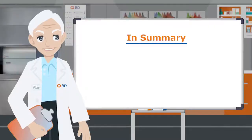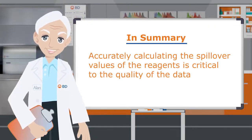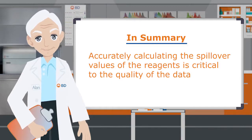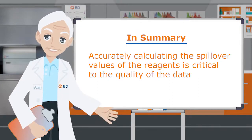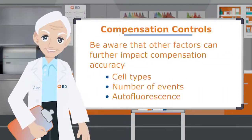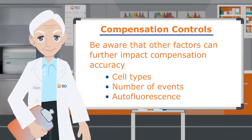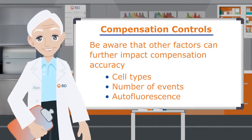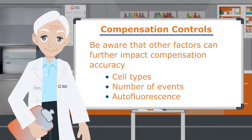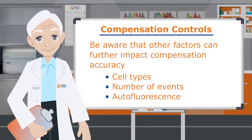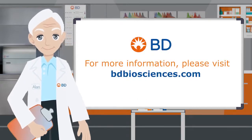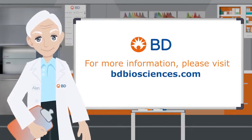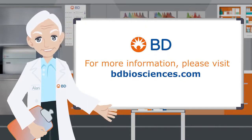In summary, accurately calculating spillover values of your reagents used in your multicolor assay is critical to the quality of the data from that assay. We have reviewed major sources of compensation errors. Be aware that other factors could also further impact compensation accuracy. By following the tips, tricks, and principles described here, you can maximize the overall quality of your multicolor assay. For more information about compensation or about the products featured on this video, please visit BDBiosciences.com.